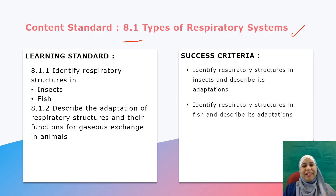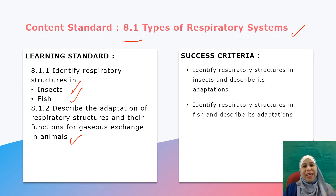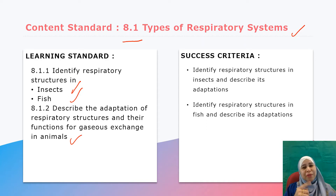The learning standard 8.1.1: Identify respiratory structures in insect and in fish. 8.1.2: Describe the adaptation of respiratory structures and their function for gaseous exchange in animals. The success criteria for today's lesson: first, you should be able to identify respiratory structure in insect and describe its adaptation. Second, you should be able to identify respiratory structure in fish and describe its adaptation.